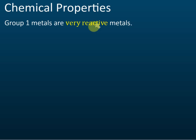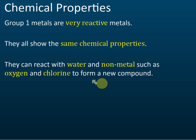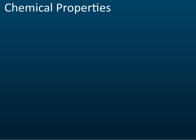For chemical properties: all group one metals are very reactive — they can easily react with other elements at a very high rate, meaning very fast. Because they are in the same group and have the same number of valence electrons, they have the same chemical properties. They can react with water and non-metals like oxygen and chlorine. In this syllabus, we only discuss reactions with oxygen and chlorine.